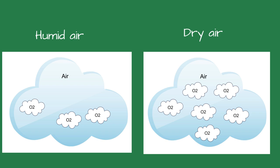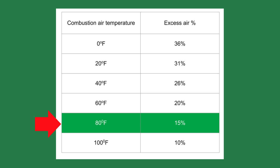Let's see how this works on your job site. You install a new boiler in August or early September and adjust the air to fuel ratio for 15 percent excess air or 3 percent oxygen. The combustion air for the boiler is connected to the outside using a PVC pipe. The outside air temperature is 80 degrees with no rain. Your combustion readings show a stack temperature of 250 degrees Fahrenheit and an efficiency of 84 percent.